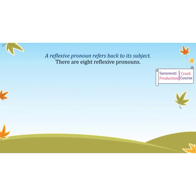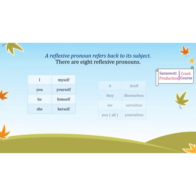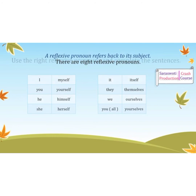A reflexive pronoun refers back to its subject. There are eight reflexive pronouns. For 'I' — myself. For 'you' — yourself. For 'he' — himself. For 'she' — herself. For 'it' — itself. For 'they' — themselves. For 'we' and 'you all' — the corresponding reflexive forms.